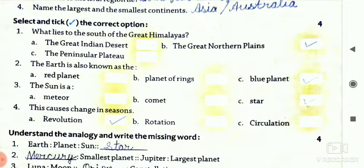Look at question number four. This causes change in season. So what is your answer? First option is revolution, second one is your rotation, and third one is your circulation. So your answer is A, revolution.